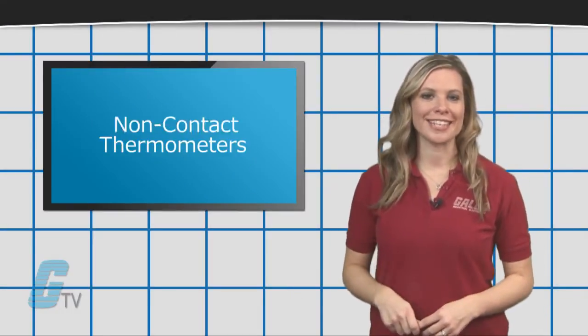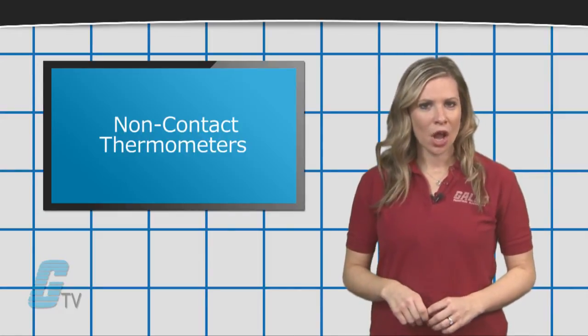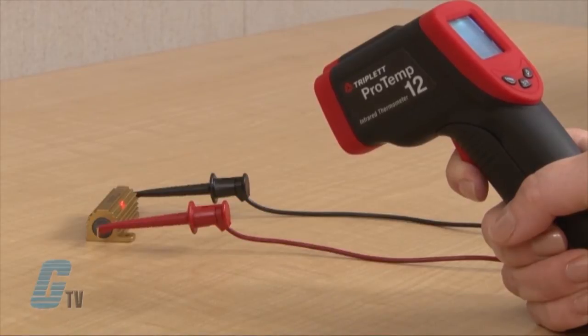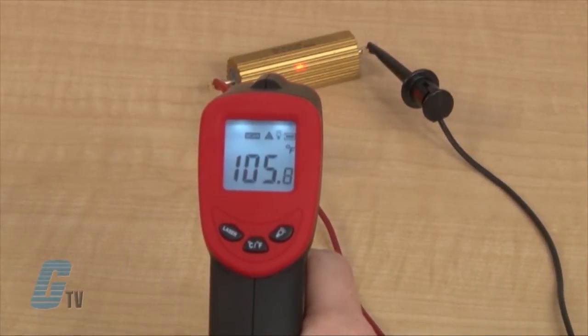Infrared thermometers, also known as non-contact thermometers, are used to find the temperature of an object by measuring a portion of the thermal radiation emitted by an object.